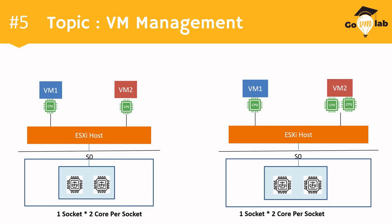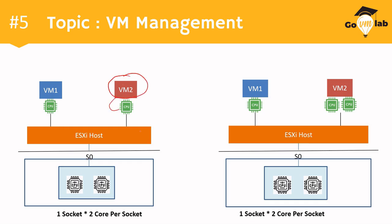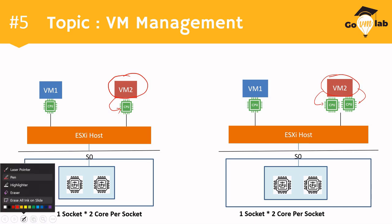Now let's look at scenario number two. In scenario number two, it looks almost exactly the same as scenario number one — two VMs running on the ESXi host, with a one socket and two cores per socket physical configuration. The only difference between scenario number one and scenario number two is the vCPU assigned to VM2. In scenario number one, VM2 is configured with only one vCPU, whereas in scenario number two, the same VM2 is configured with two vCPUs.